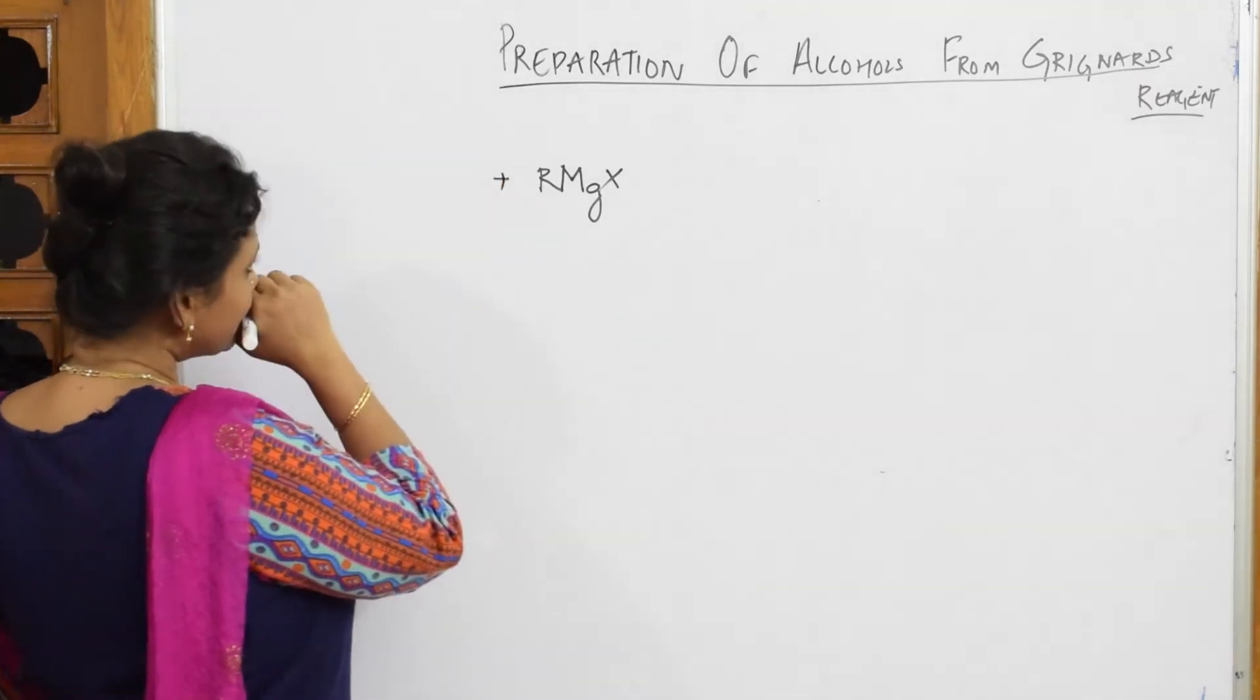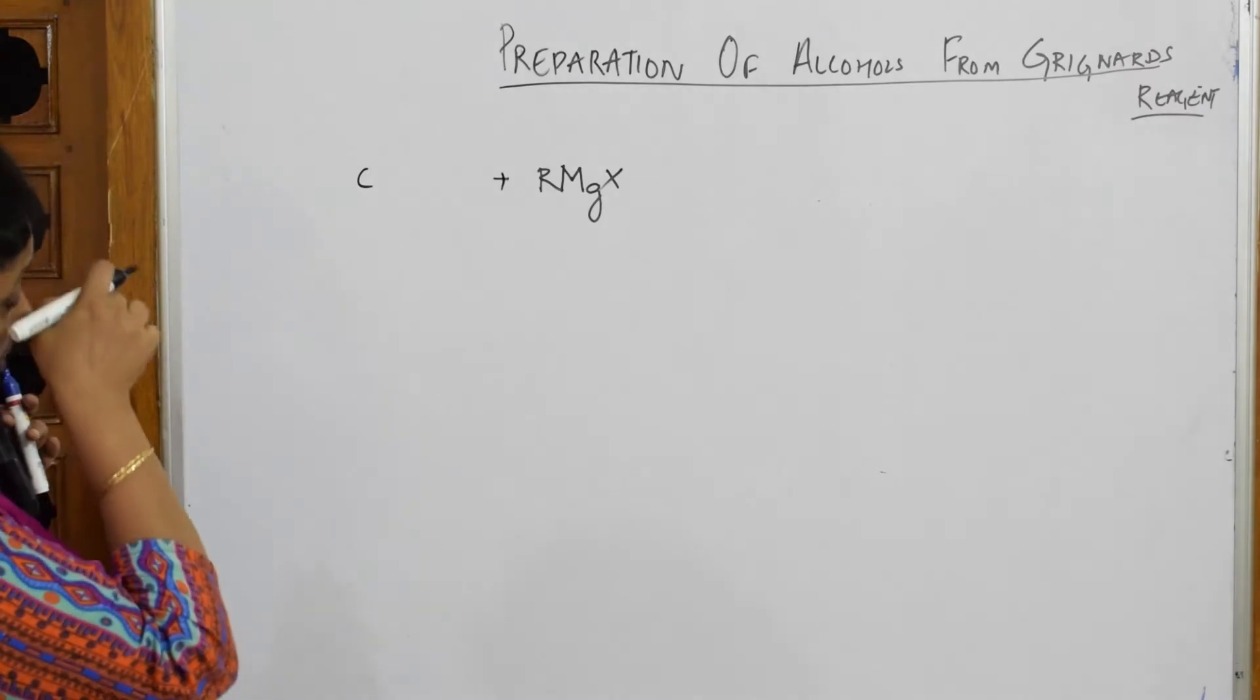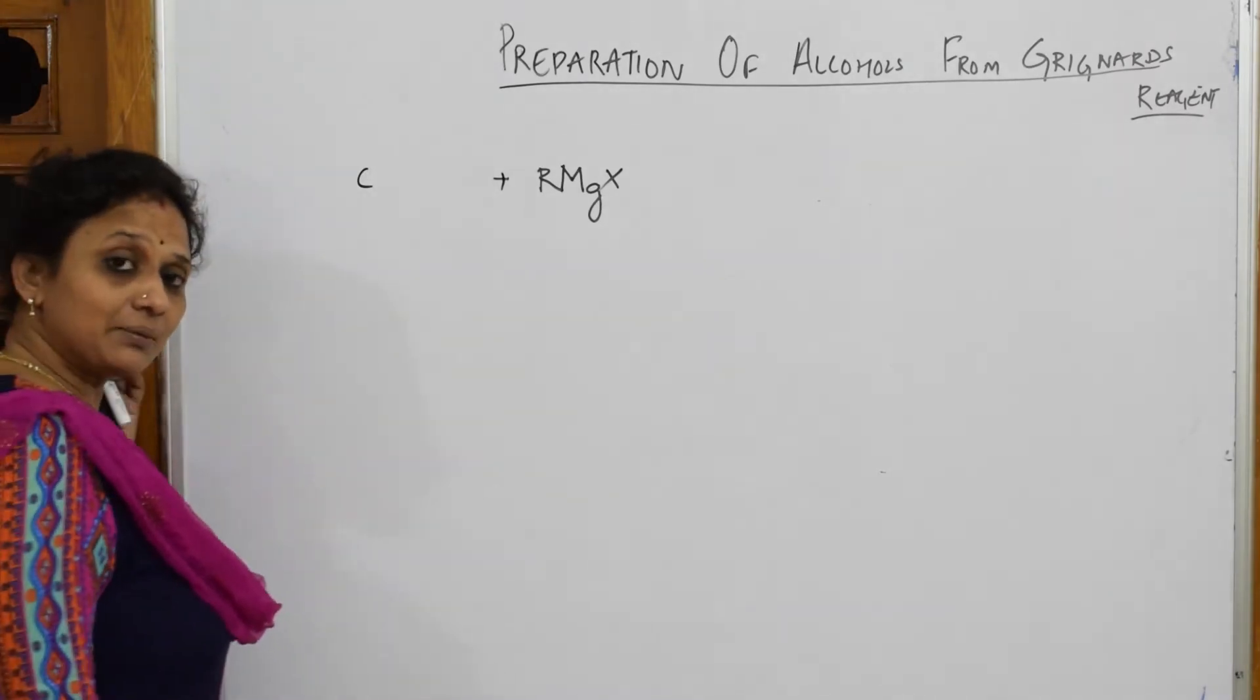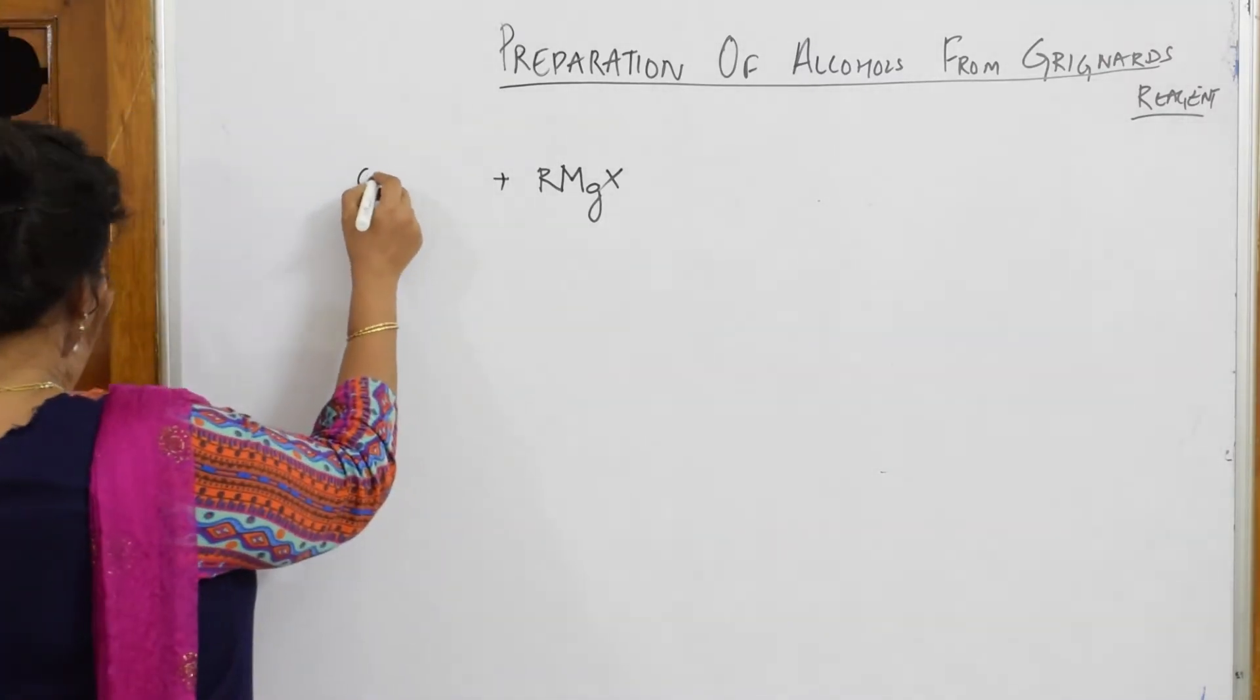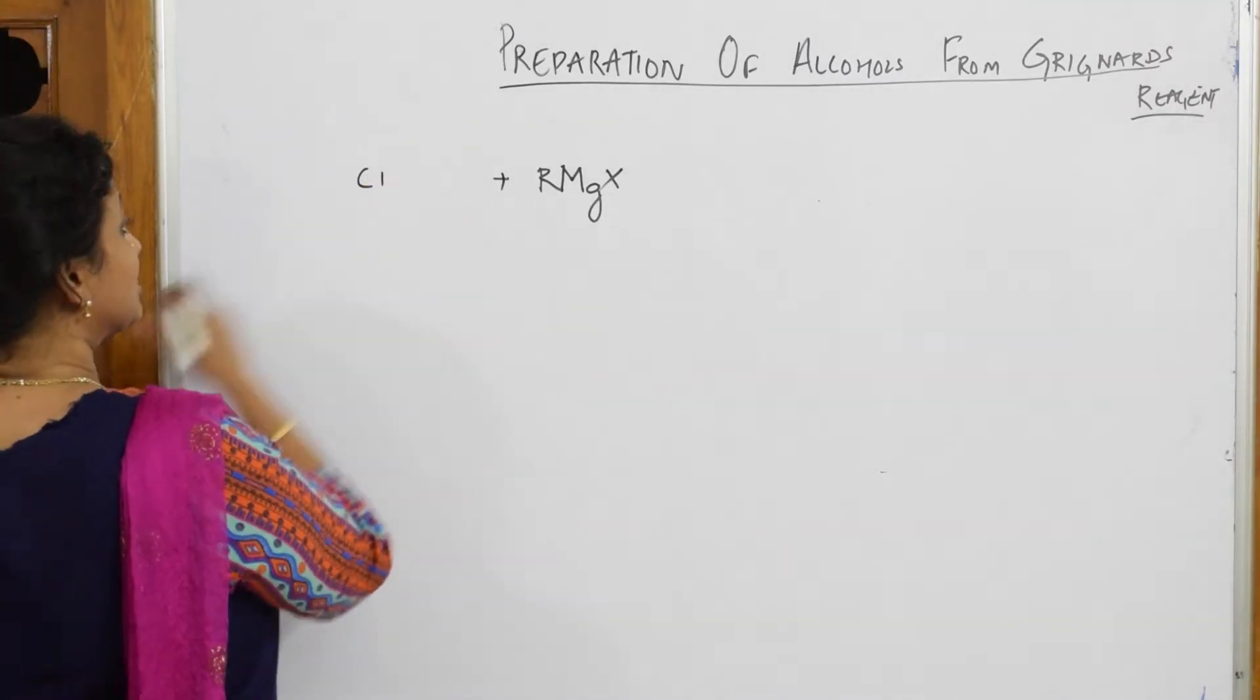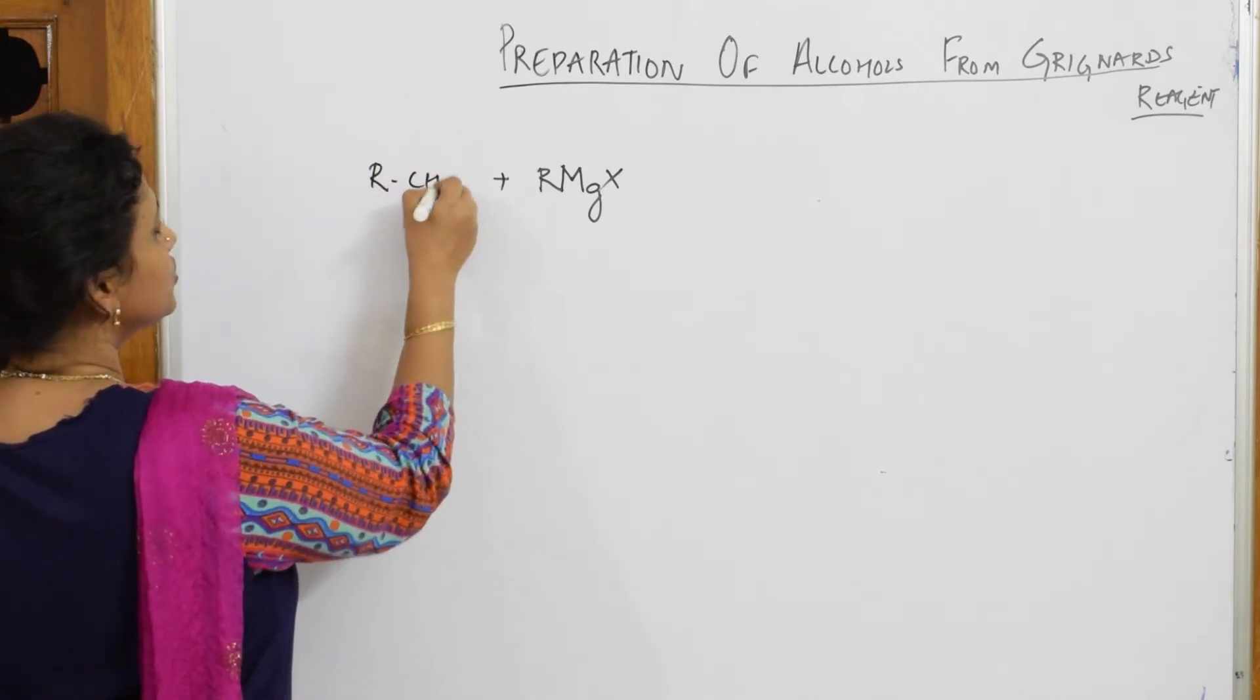I will be showing you with formaldehyde, acetaldehyde, and ketone also. So when I am adding this to an aldehyde, so I picked up this R. So I will write this as RCHO.